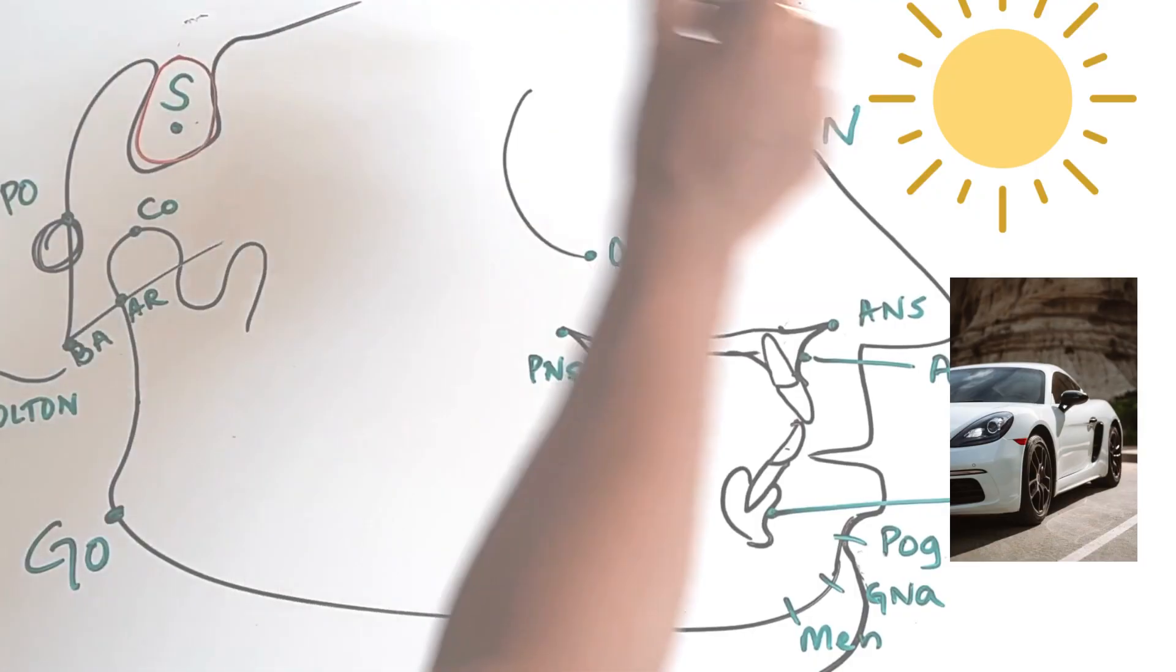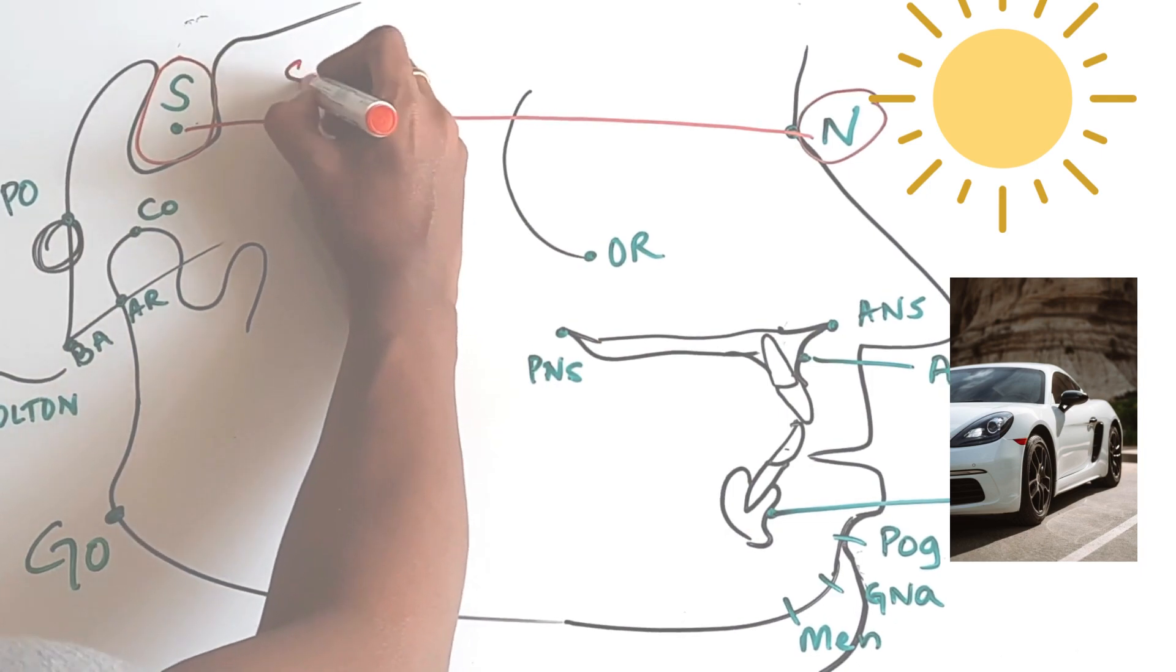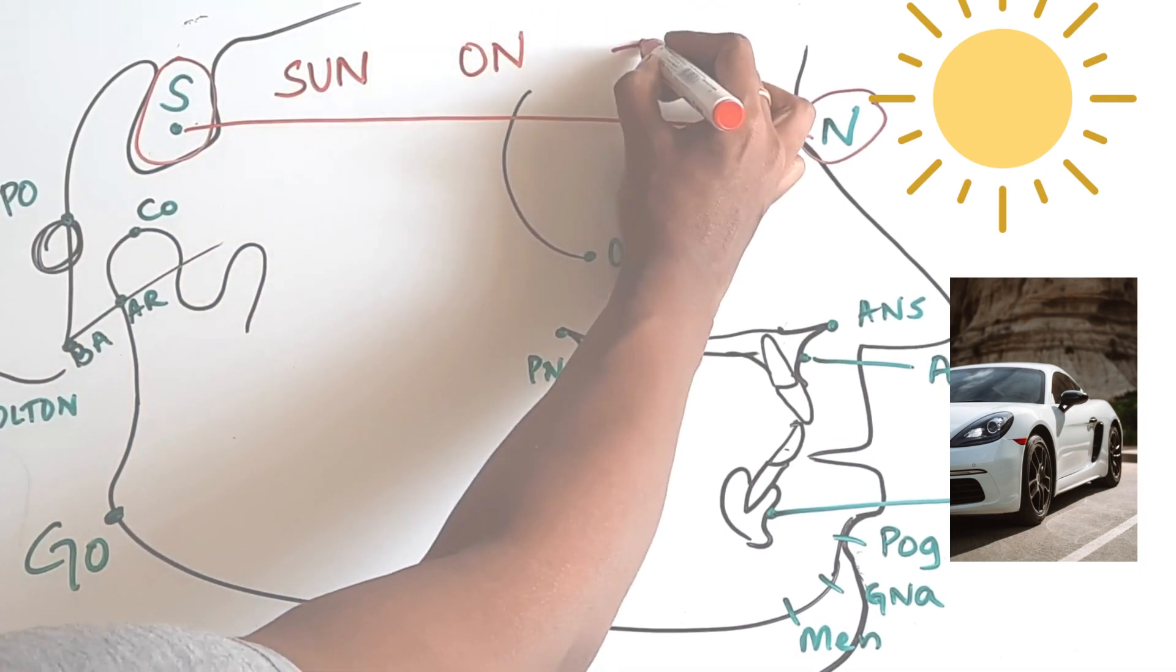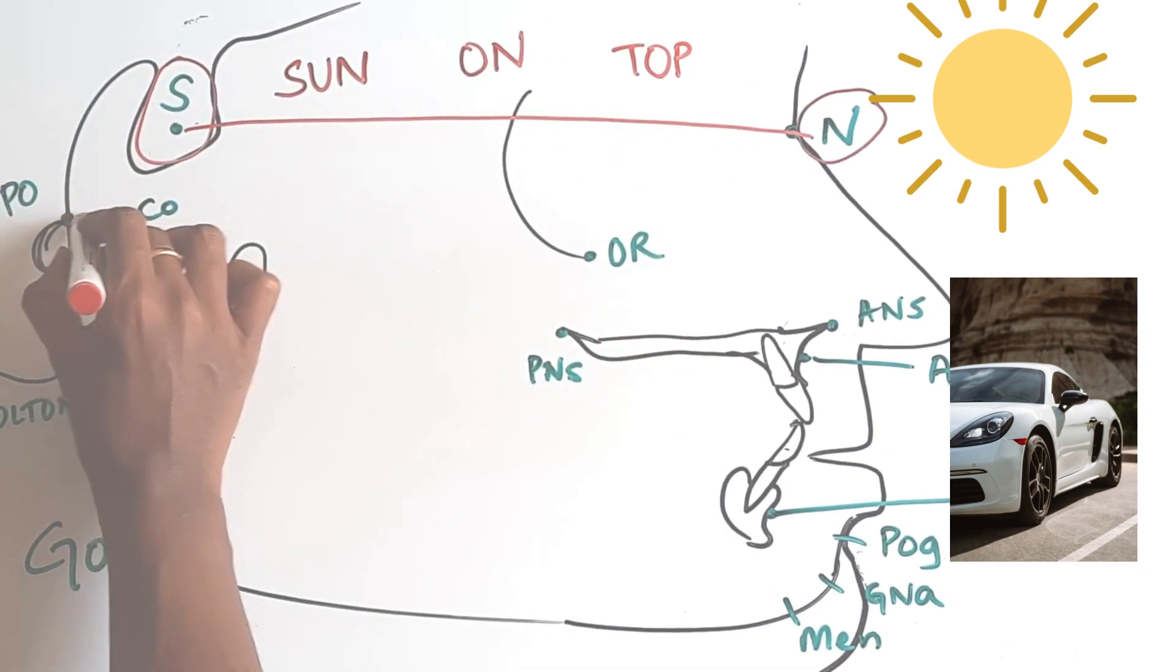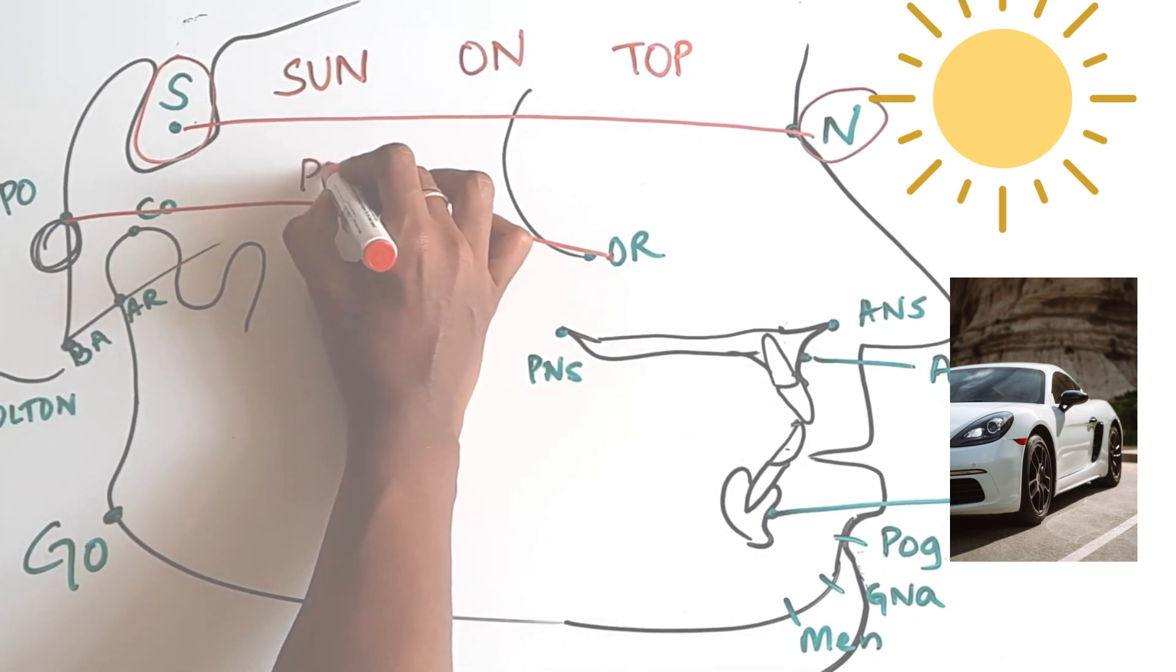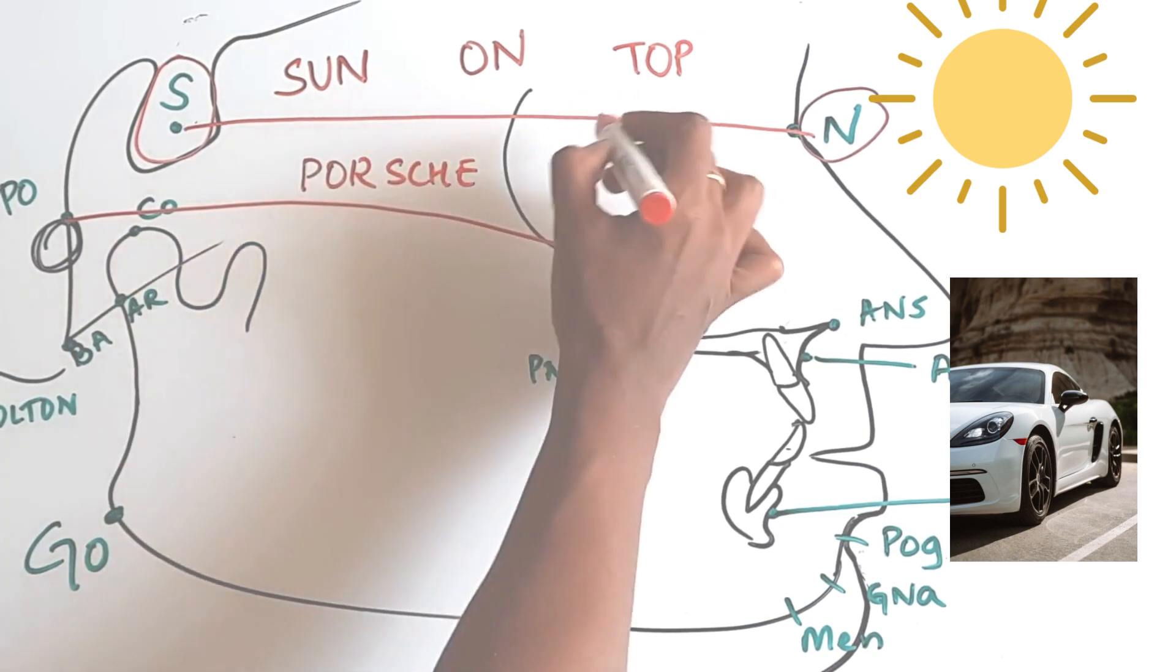Let's get to the mnemonics now. SN stands for sun on top. S-U-N has SN, so sun is on top. Porion orbital, for porion orbital, it is Porsche below. Porsche is a car name and cars go on the road. So, sun on top and Porsche below.